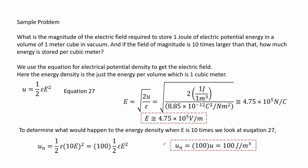Sample problem: What is the magnitude of the electric field required to store 1 joule of electric potential energy in a volume of 1 meter cubed in vacuum? And if the field magnitude is 10 times larger, how much energy is stored per cubic meter? Using the energy density equation 27 — where energy density is 1 joule per 1 cubic meter — we solve for the electric field. If E is 10 times larger, examining equation 27 shows the potential energy density becomes 100 times larger, or 100 joules per cubic meter.